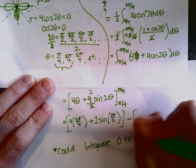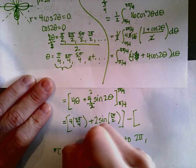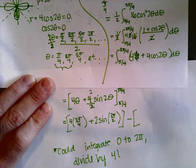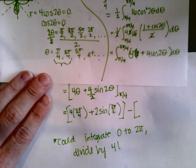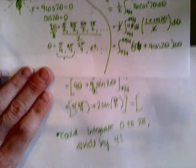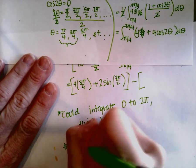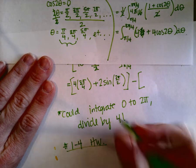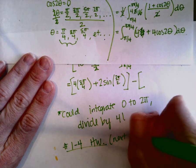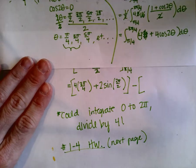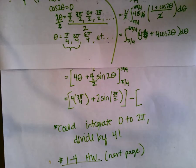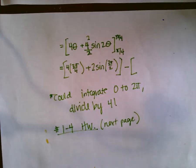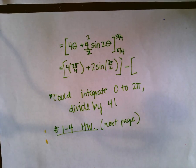An alternate way to solve this is to integrate from zero to two pi and then divide by four, since there are four petals — the numbers will probably be easier that way. For homework, just do the next page, numbers one through four. Don't worry about pages five and six. I'll be back tomorrow to answer questions. Good luck finding area of polar curves!